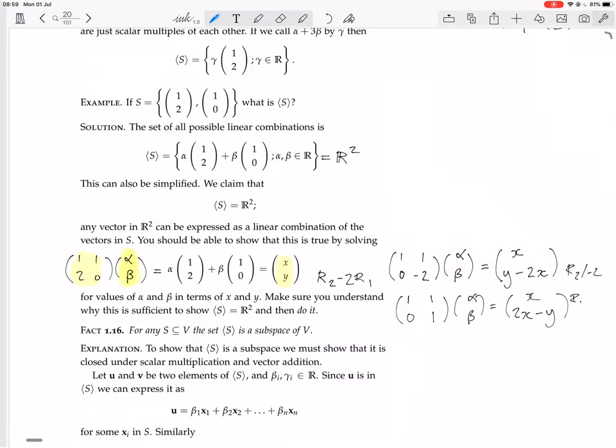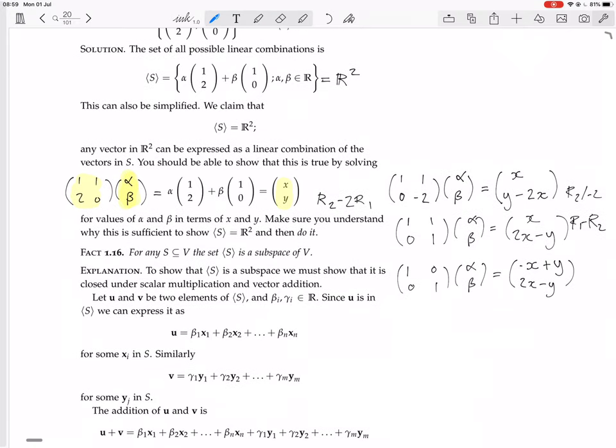Now let's do row 1 minus row 2. So then we're going to get [1,0; 0,1] [alpha; beta] equals, so x minus 2x, that would be minus x, minus minus y is plus y. So we have minus x plus y, and we have here we still have the 2x minus y.